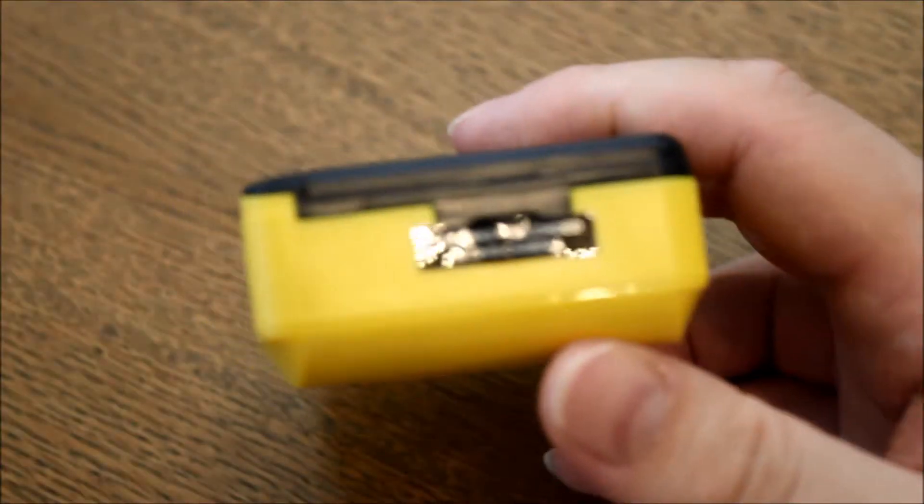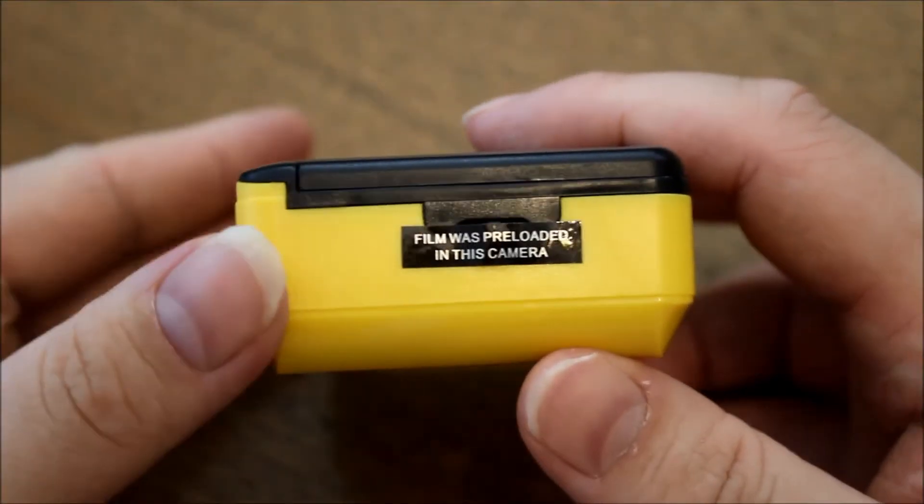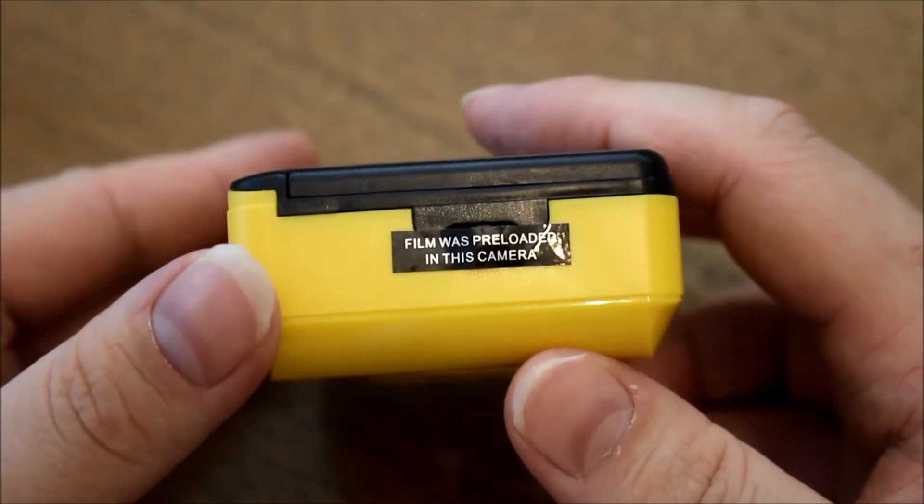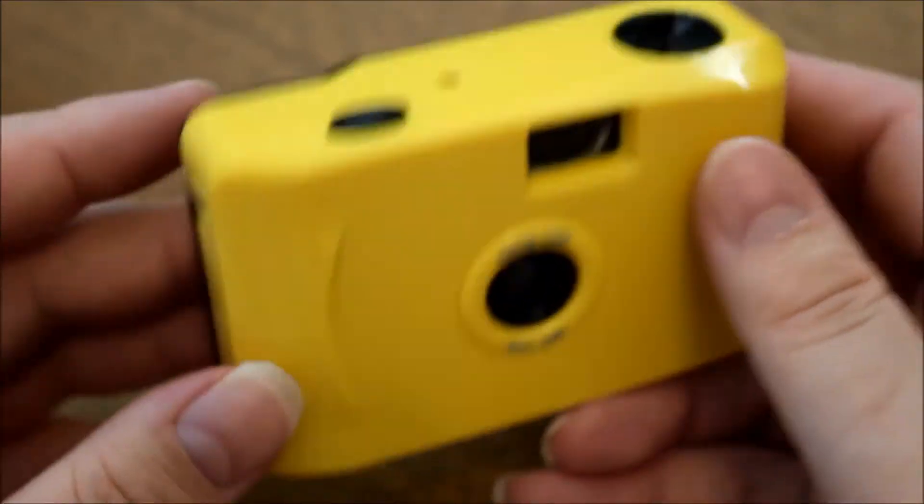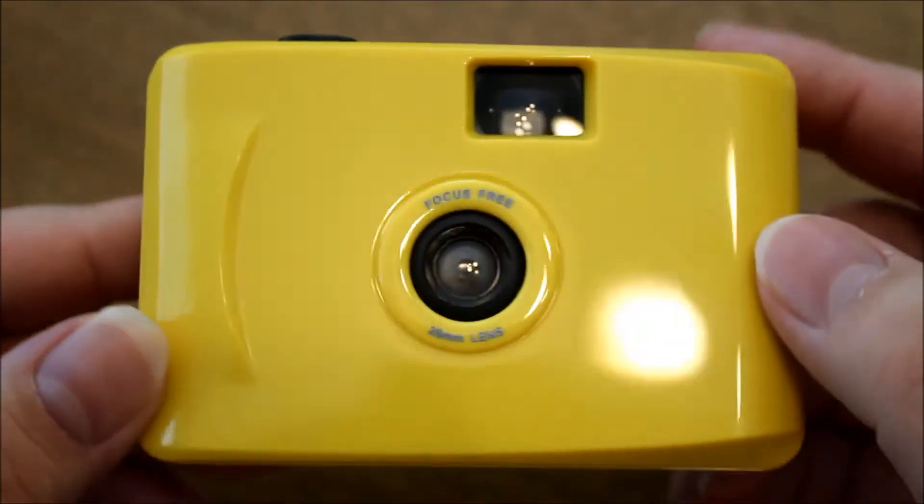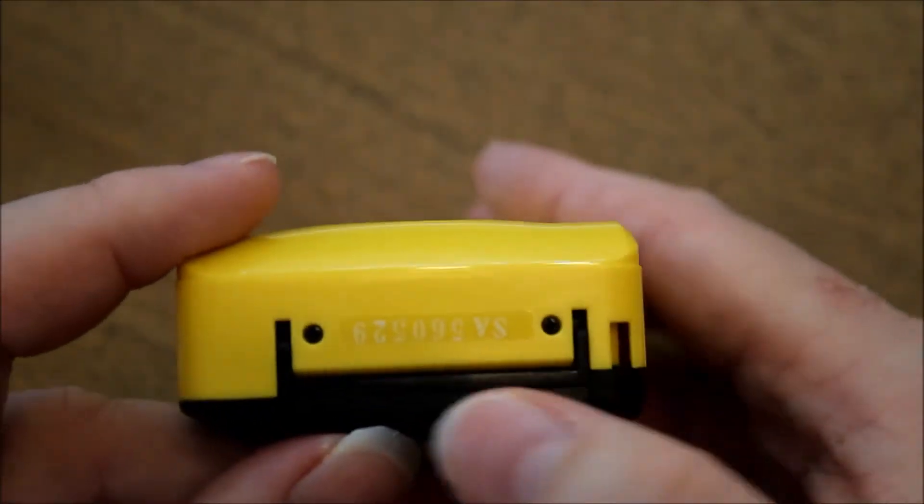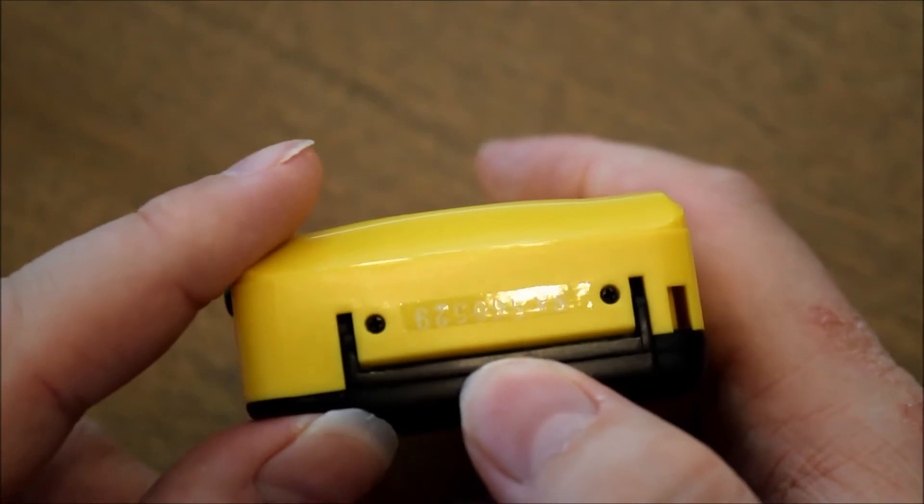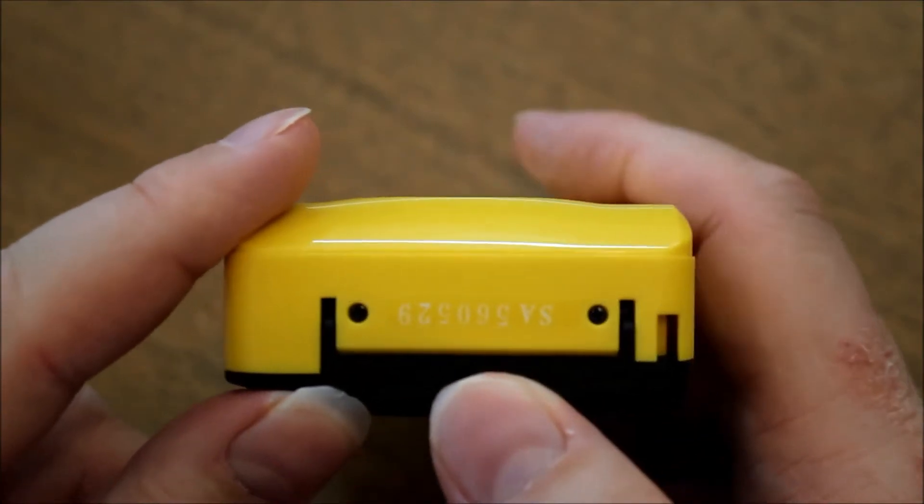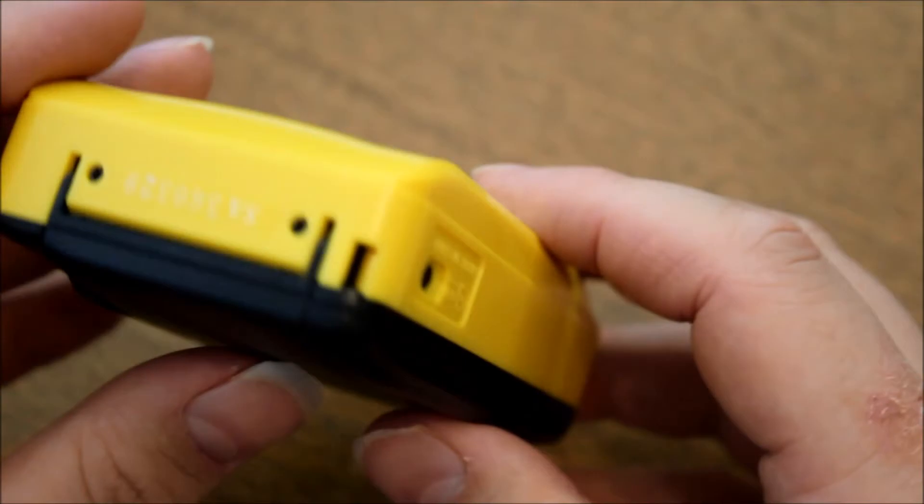And by the way, if you purchase this camera new like I did, she comes pre-loaded with film. It's an ISO 200 film in it. And it's not the fastest film and not perfect for underwater, but you can always change the film. And it's nice to have a free film in it.